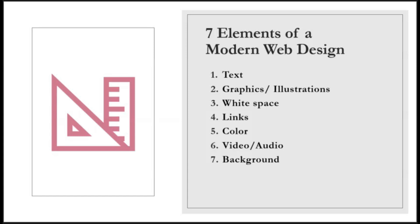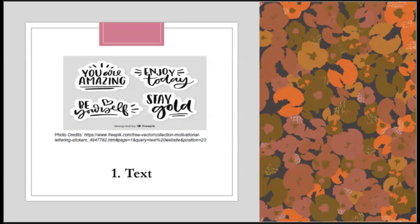There are seven elements of modern web design: text, graphics and illustrations, white space, links, color, video or audio, and background. For text, this is a mandatory element of a web page. However, visitors can get distracted by the font family used on a website. So while designing your website, make sure you choose the font family and type carefully, and make the text as clear and readable as possible.